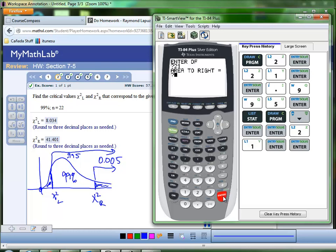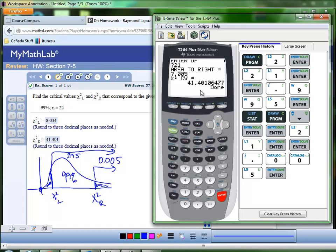We're going to find the chi-square critical value. The area to the right this time is 0.005, Enter. And then there's that little thinking bar. And when that's finished, we're going to get 41.401 rounded off to three decimal places. And here it goes, 41.40106477.